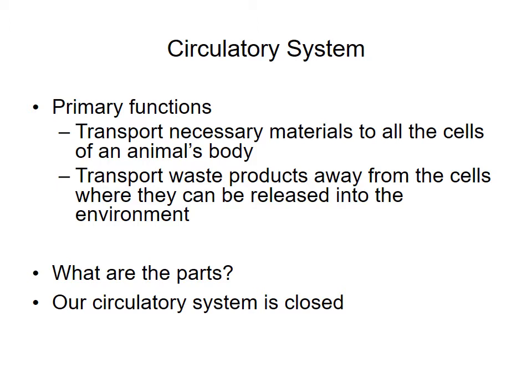The circulatory system has two main primary functions. The first is that it transports all of the necessary materials to all of the cells in the animal's body — things like oxygen carried by red blood cells, but also nutrients, sugars, hormones, neurotransmitters, and other types of signals from one part of the body to the next. The circulatory system is also important for transporting waste products away from the cells so they can later be released from the body.